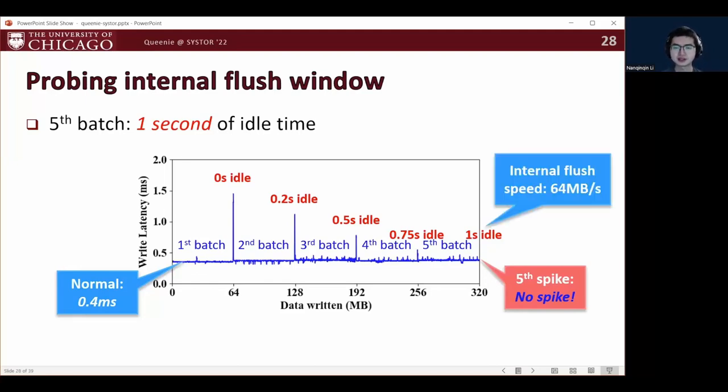Another way to think about this is that this SSD has an internal flush speed of 64 megabytes per second, meaning that this SSD's internal flush is capable of consuming write workload at a rate as high as 64 megabytes per second without triggering a full buffer flush.